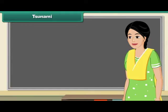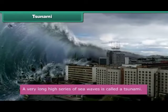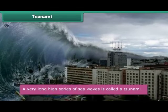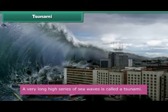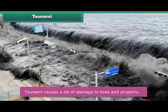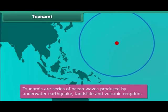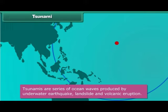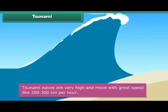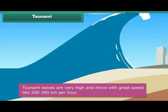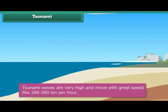Students, you must have heard about tsunami. A very long, high series of sea waves is called a tsunami. It causes a lot of damage to people and property near the sea. Tsunamis are series of ocean waves produced by underwater earthquakes, landslides, and volcanic eruptions. These waves are 30 meters high and 200 kilometers long and travel at a speed of 200 to 300 kilometers per hour.